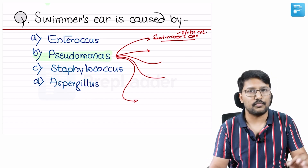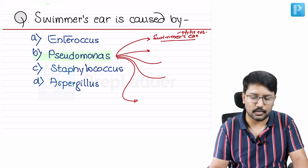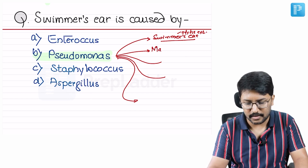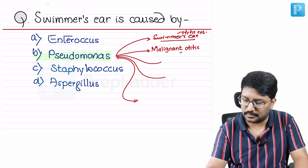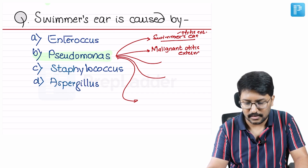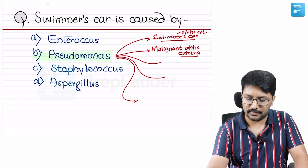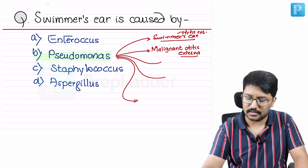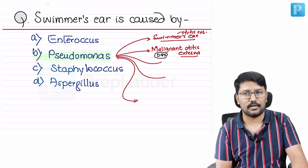Apart from that, Pseudomonas is the most common organism responsible for malignant otitis externa. We are very familiar with this from ENT and MBBS days. The key risk factor for malignant otitis externa is diabetes mellitus.